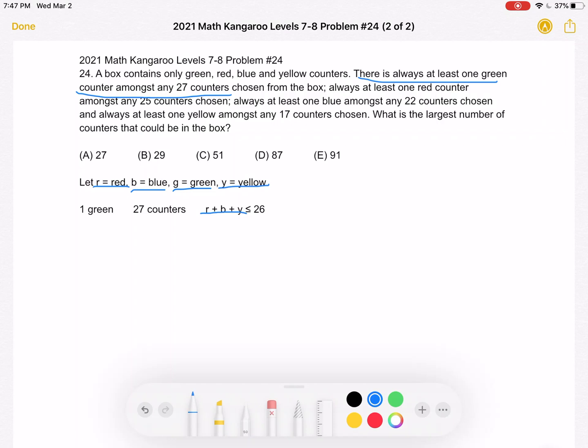So the rest of it, the red, blue, and yellow, can make up at most 26. And we're going to continue on with this logic.